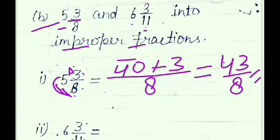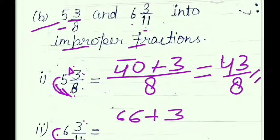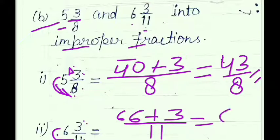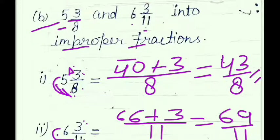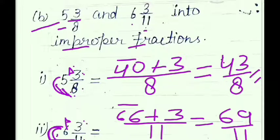Next, 6 whole 3 upon 11: multiply denominator by whole number — 11 × 6 = 66 — then add numerator 3: 66 + 3 = 69 upon 11 as denominator. So 6 whole 3 upon 11 equals 69 upon 11. Got it?